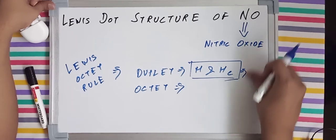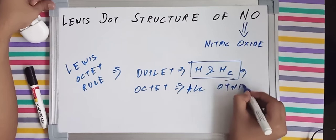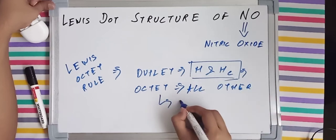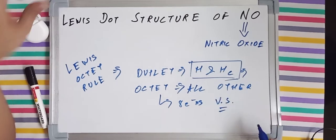So they want to complete their duplet, but all others want to complete their octet, which means they want to have 8 electrons in their valence shell.